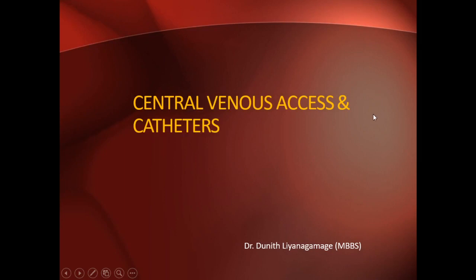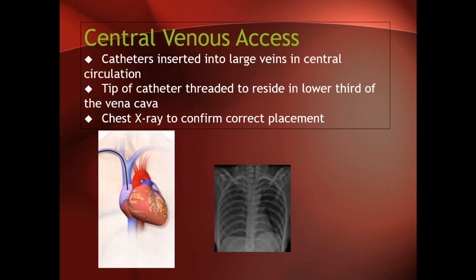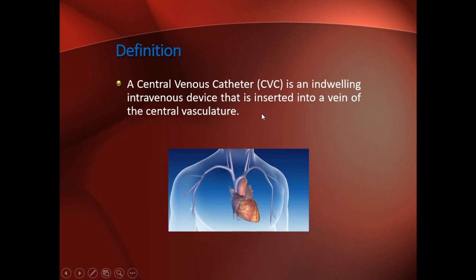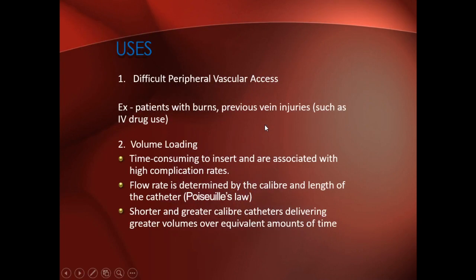The presentation is about central venous access and catheters. Central venous access involves catheters inserted into large veins in the central circulation, with the tip of the catheter threaded to reside in the lower third of the vena cava. We know we have the superior vena cava and inferior vena cava. After insertion, we can do chest X-rays to confirm correct placement, or ultrasound examination to check whether it is inserted properly. A central venous catheter (CVC) is an intravenous device inserted into a vein of the central vasculature, specifically the superior vena cava.